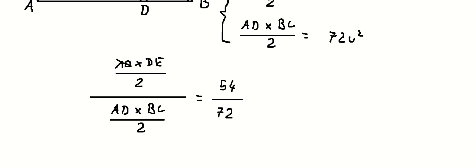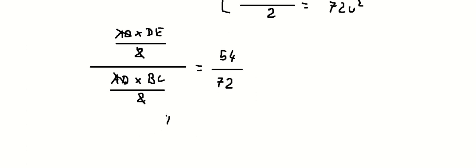AD and 2 simplify, so right now we just have DE over DC.